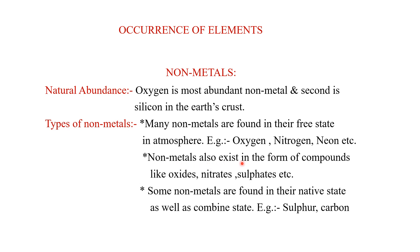Some non-metals can also exist in the form of oxides, nitrates, and sulfates because they are reactive and will react with other substances to form compounds. Some non-metals are found in their native unreacted form as well as in a combined state — for example, sulfur and carbon. But carbon and sulfur are also reactive, so they form compounds like sulfate, sulfur dioxide, carbon dioxide, and carbon monoxide. These are the ways metals and non-metals are found in nature.